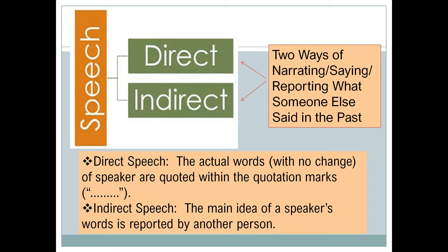What do we mean by Direct and Indirect Speech? Both are two different ways of reporting or narrating what someone else said in the past. When the speaker says something and the actual words of the speaker, without any change, are quoted within quotation marks, that is called Direct Speech. In Indirect Speech, the main idea of the speaker's words is reported by another person. So in simple words, quoting a person using your own words is Indirect Speech.